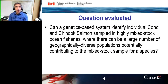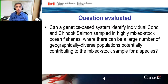We have this codewire tag program where physical tags are inserted into the nasal cartilage of individuals when they're released from a hatchery and are subsequently sampled when they return. What we're looking at is whether we can use a genetics-based system to provide similar information — where fish are sampled in highly mixed ocean fisheries and we use genetic information to identify individual fish to specific hatcheries and year of release, even when a very large number of geographically diverse populations contribute to a mixed stock sample from a fishery.